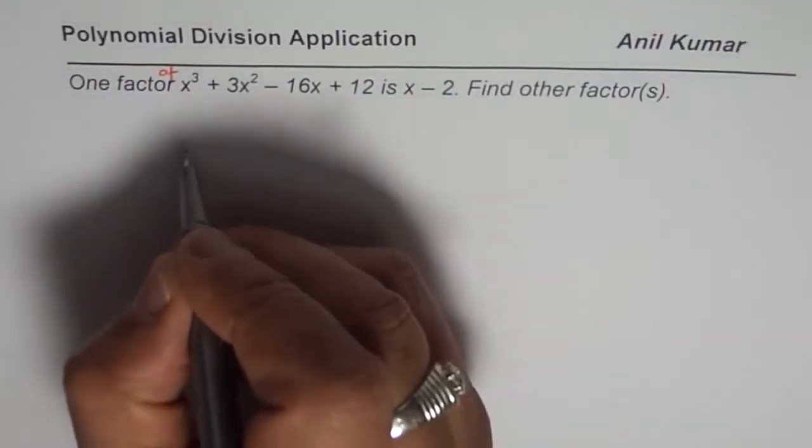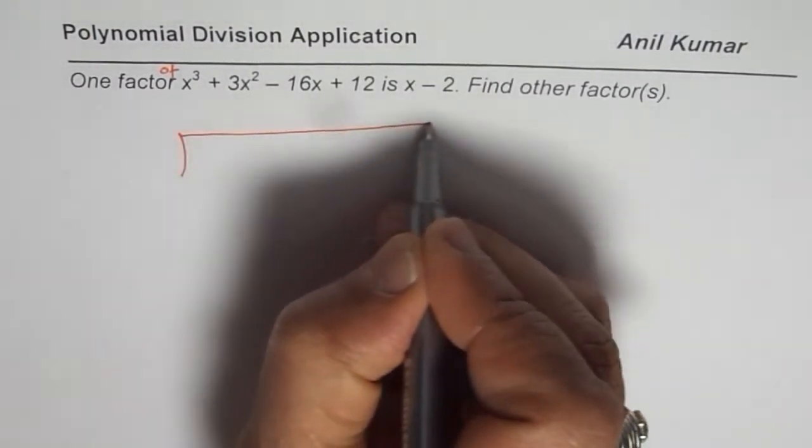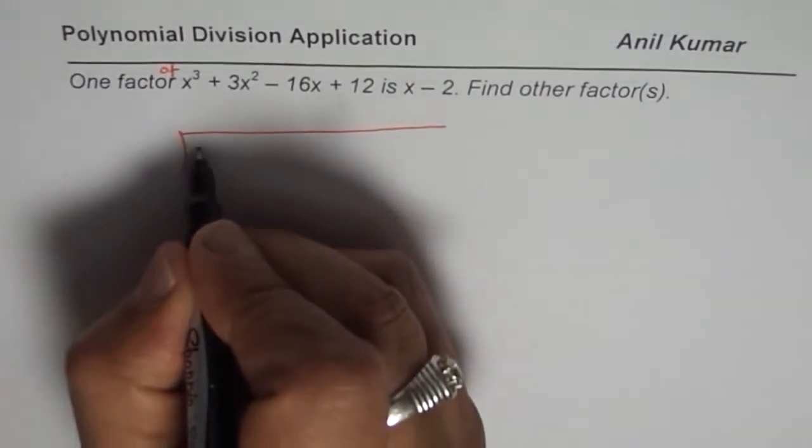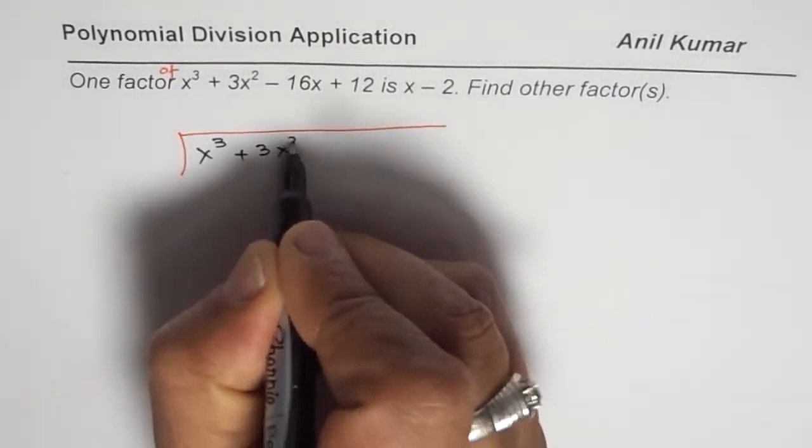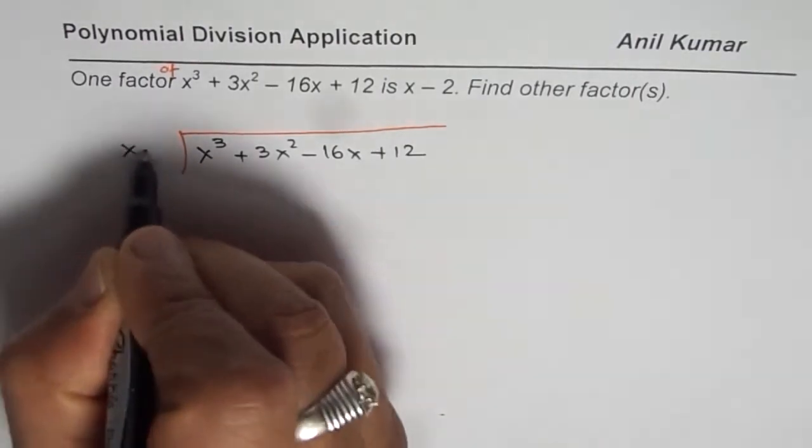So let us begin by long division. That is what we are practicing also. Let us begin with long division and see what the quotient is. So we need to divide x³ + 3x² - 16x + 12 by x - 2.